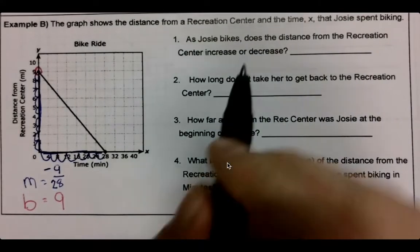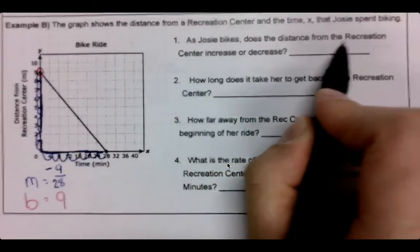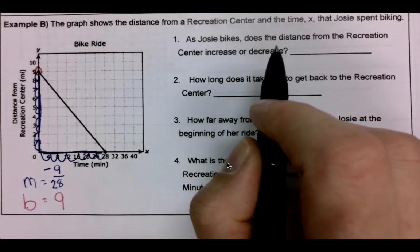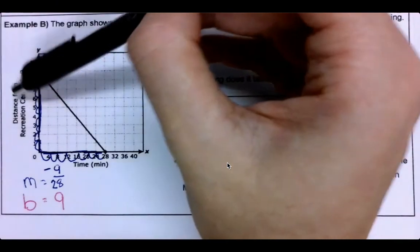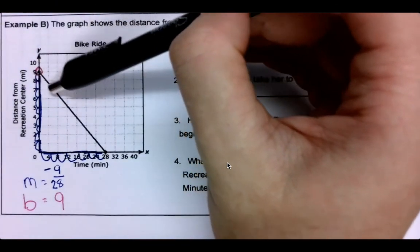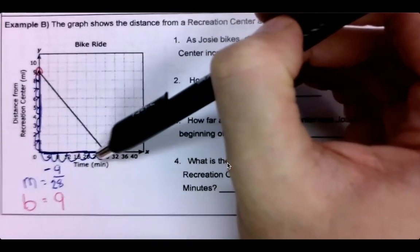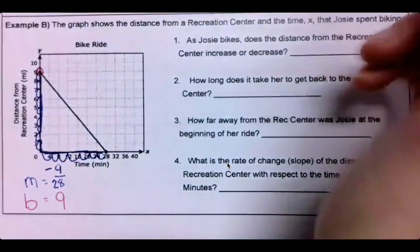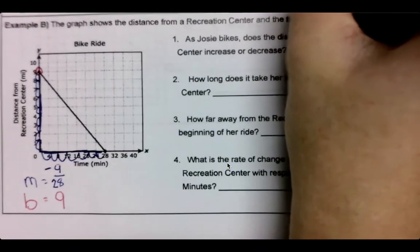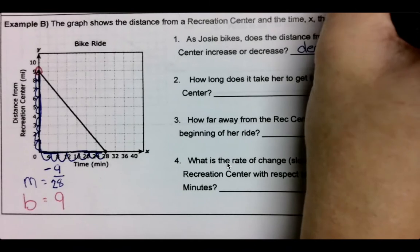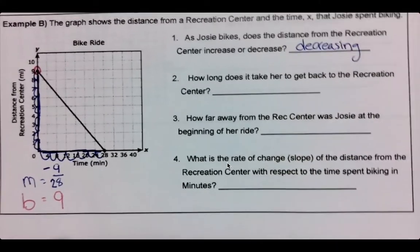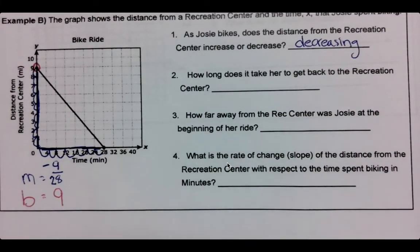All right. So does the distance increase or decrease? If this is the distance, she starts at nine and it's going this way and we end at zero, the distance from it is decreasing, right? Another way to look at that is our slope was negative, which would also be decreasing. Positive, increasing; negative, decreasing.